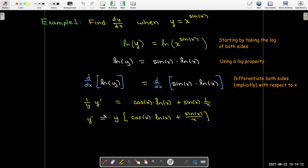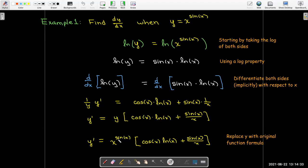And we can solve that for y prime, just multiply both sides by y. I'll have to put this expression in brackets to show that the whole thing is being multiplied by y. And finally, I'll replace y with its original equation or original formula. And so I'll get the expression x raised to the power of sine x times the quantity cosine of x times natural log of x plus sine of x over x. And that's my derivative.